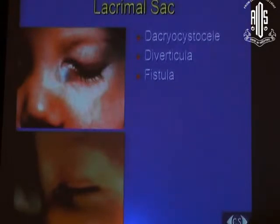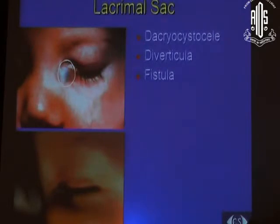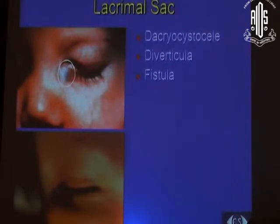Dacryocystocele is an entity presenting at birth as a fluid swelling where not just the nasolacrimal duct but also the common canaliculus is blocked — possibly due to kinking from high pressure inside the sac. Both ends of the lacrimal system are blocked, causing retention: congenital dacryocystocele or amniocele. This is a medical emergency because bilateral cases with intranasal extension can cause respiratory distress in children, who are obligate nasal breathers, requiring immediate intervention.